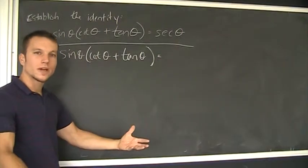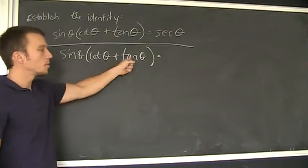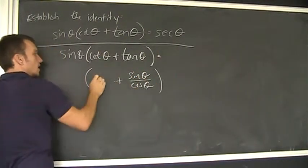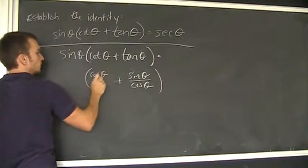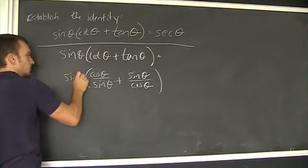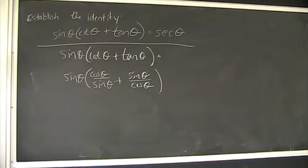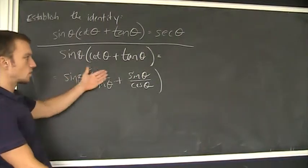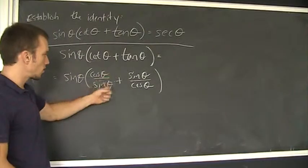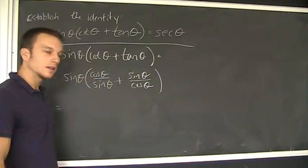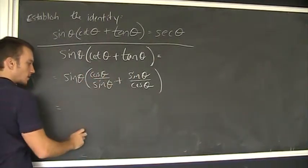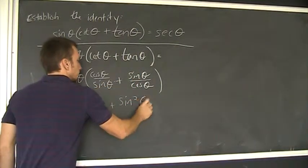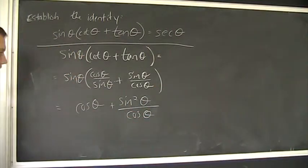These things sometimes you start one way, it doesn't work, you start over. So my first guess would be to replace tangent with the identity sine theta over cosine theta, and then the cotangent, of course, is the reciprocal of that — cosine theta over sine theta — and don't forget sine theta is still out here. I'm going to try to distribute the sine theta and see where that goes. Sine theta times the cotangent fraction gives cosine theta, and sine theta times the tangent fraction gives sine squared theta over cosine theta.